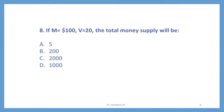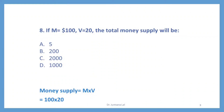Question number 8. If M is $100 and V, that is velocity of circulation, is 20, what will be the total money supply? Options are 5, 200, 2000, or 1000. You have to calculate total money supply using the formula M multiplied by V — stock of money multiplied by the velocity of circulation. So the correct option is C — 2000, because 100 multiplied by 20 equals 2000.